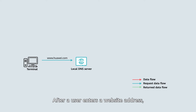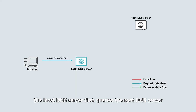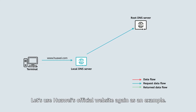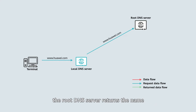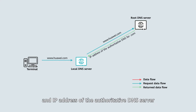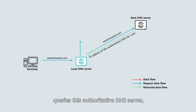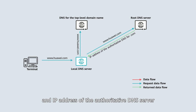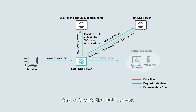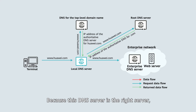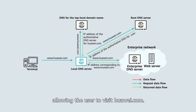After a user enters a website address, the local DNS server first queries the root DNS server for the top-level domain name. Using Huawei's official website as an example: after receiving a query from the local DNS server for the IP address of Huawei's official website, the root DNS server returns the name and IP address of the authoritative DNS server for the top-level domain, namely .com. The local DNS server then queries this authoritative DNS server, which returns the name and IP address of the authoritative DNS server for the level 2 domain, namely huawei.com. The local DNS server then queries this authoritative DNS server, which provides the IP address of Huawei's website, allowing the user to visit huawei.com.